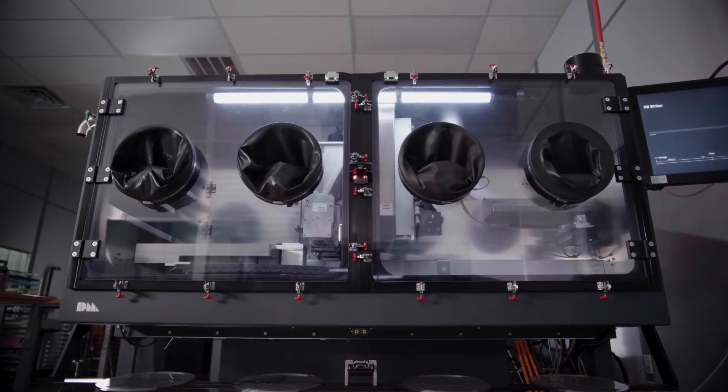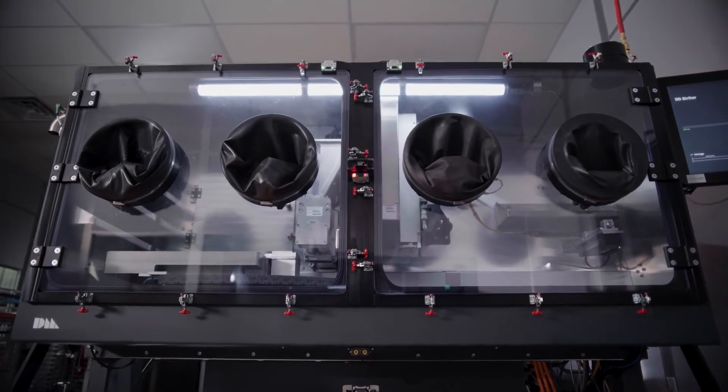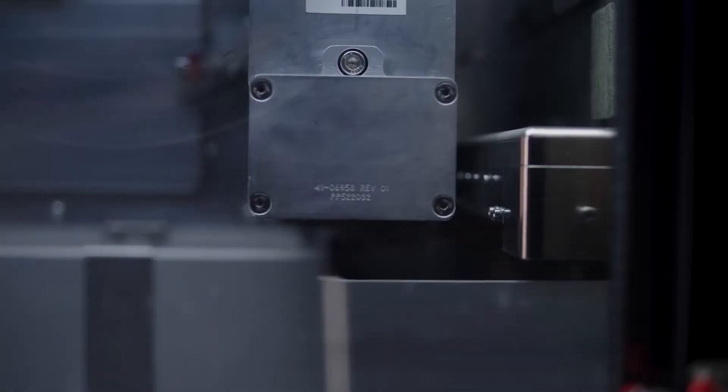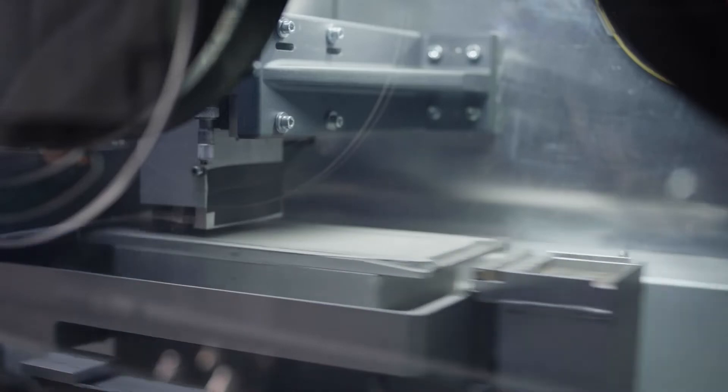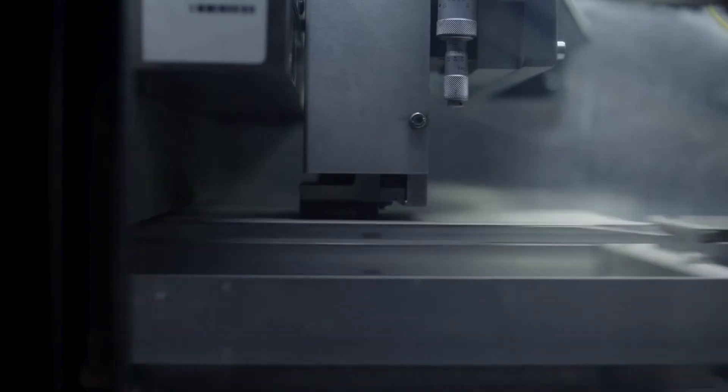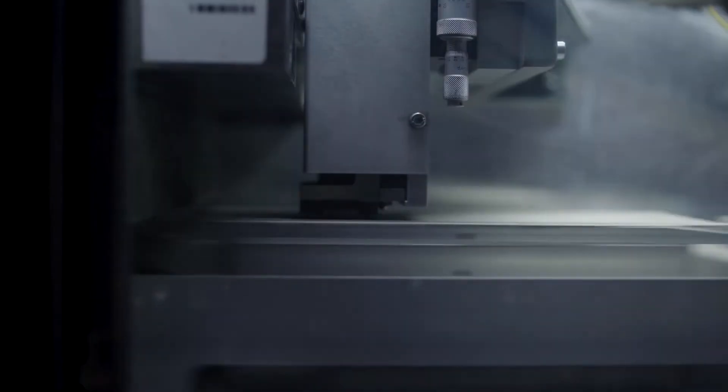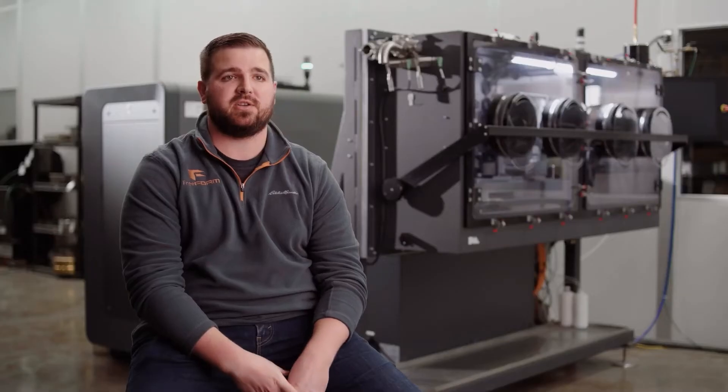With the production system, we're processing a layer of material and printing a layer of parts every three seconds. So we're able to print a lot of parts in a short amount of time, which allows us to get to market faster, allows us to iterate our process faster, allows our customers to iterate their products faster. That's one of the major advantages.